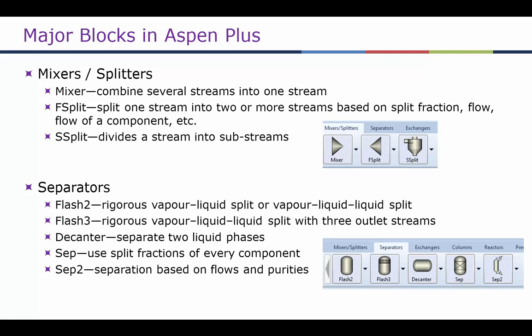Let's look at the blocks in Aspen+ used to simulate physical units. For mixing or splitting of streams, we can use the Mixer block, F-Splitter — which splits one stream into two or more streams based on split fraction, flow rates, or flow of a component — and S-Split, which divides streams into substreams. For separation processes like a decanter or flash operation, Flash 2 is a rigorous vapor-liquid or vapor-liquid-liquid splitter. The '2' signifies the minimum number of outlet streams: one input and minimum two outputs, usually one vapor and one liquid stream.